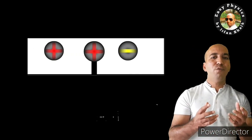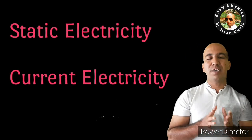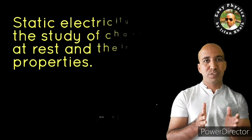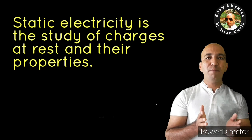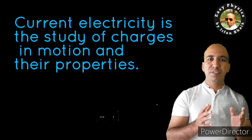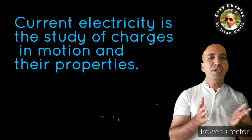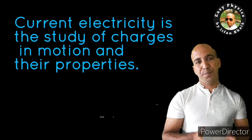On the basis of this, electricity has been divided into two parts: static electricity and current electricity. Static electricity is the study of charges which are at rest and their properties. Current electricity is the study of charges which are in motion and their properties. In this chapter, we are going to discuss current electricity — that is, the motion of charges and their properties.